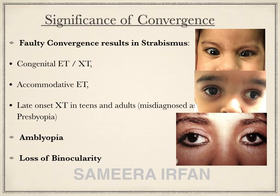An absence of convergence at birth results in exotropia at birth, or too much convergence results in a child born with an esotropia. In turn, lack of convergence, lack of accommodation, and prolonged exotropia can result in amblyopia and loss of binocularity.